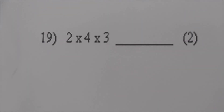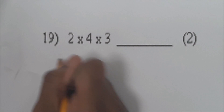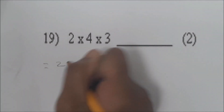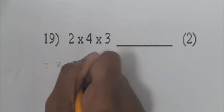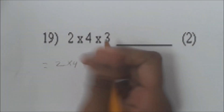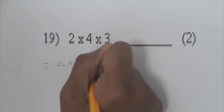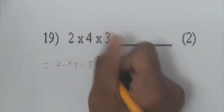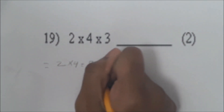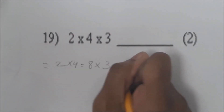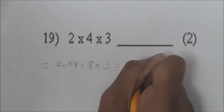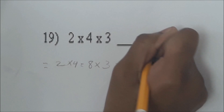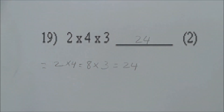Number 19: 2 times 4 times 3. First 2 times 4 equals 8, then 8 times 3 equals 24. Very good — you multiply twice and the answer is 24.